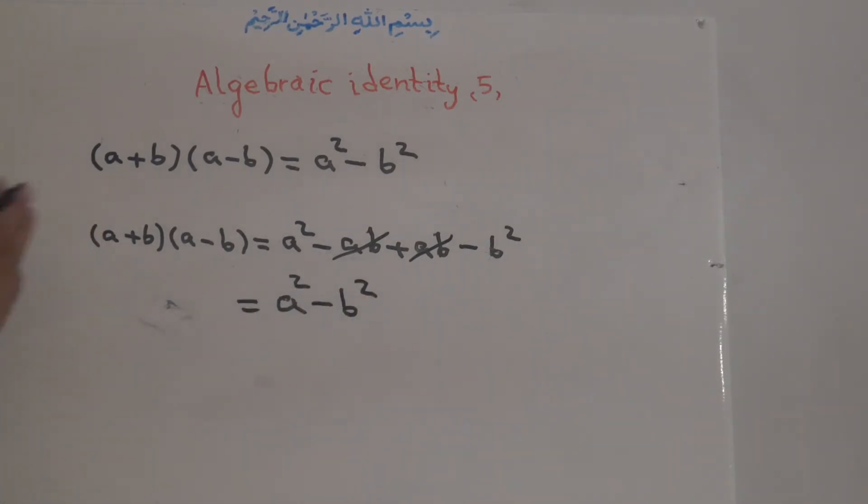It means that A plus B times A minus B is equal to A to the power of 2 minus B to the power of 2.